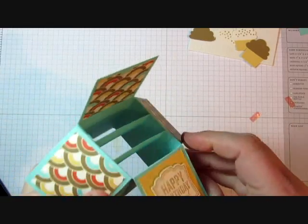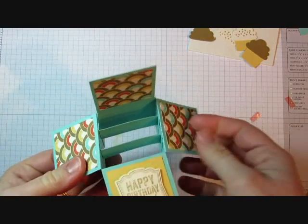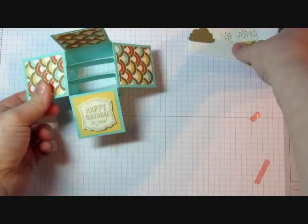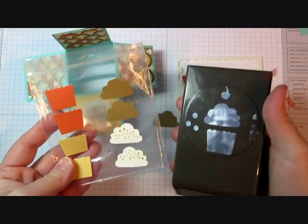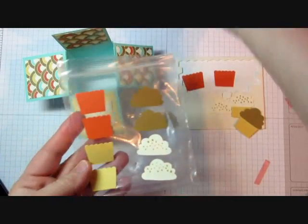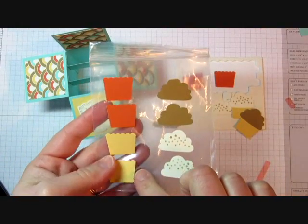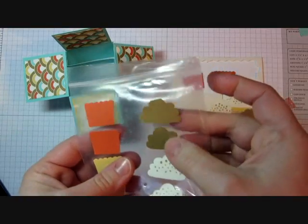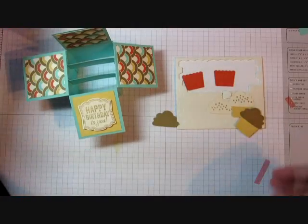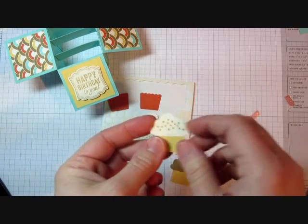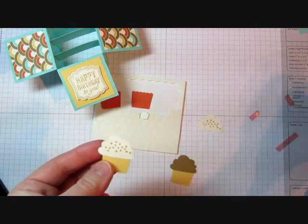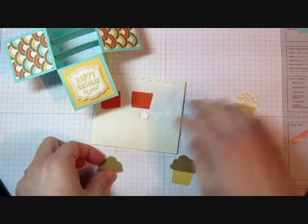Here are the pieces that I've cut. I used the cupcake builder punch. I've got 2 Tangerine Tango and 2 So Saffron cupcake bases, and then 2 chocolate and 2 vanilla frostings. I used the little confetti or the sprinkles from the Create a Cupcake stamp set. That's where I got that one from.